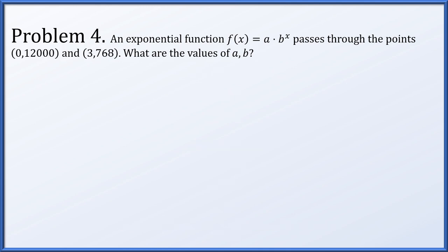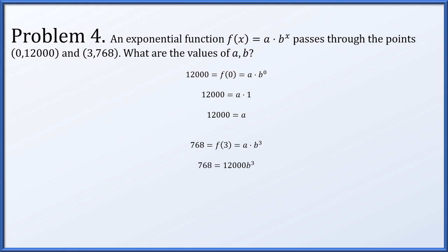Problem 4: again an exponential function a·b^x, assuming b is positive and not equal to 1, passing through two points. Since f(0) = 12,000, a must be 12,000. Since f(3) = 768, dividing by a gives b^3 = 768/12000 = 8/125, and the cube root of that is 2/5. So b equals 2/5.